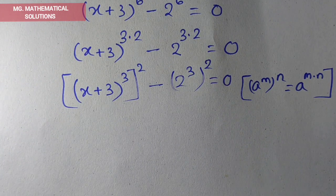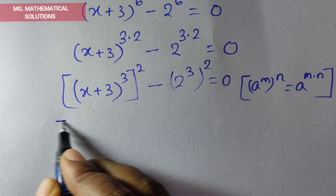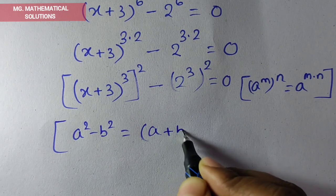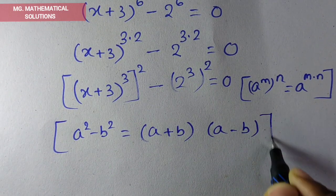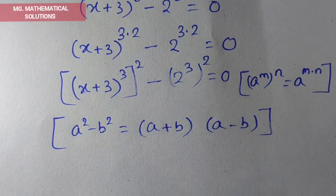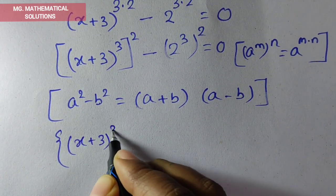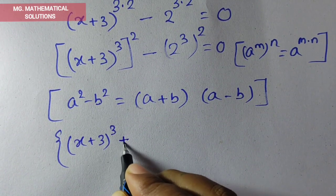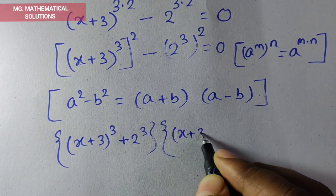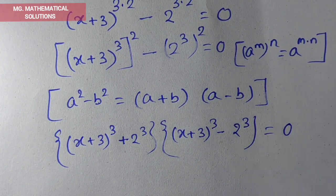Now we use the formula a² minus b², which equals (a + b)(a − b). Here a means (x + 3)³ and b means 2³. So we get [(x+3)³ + 2³] times [(x+3)³ − 2³] = 0.